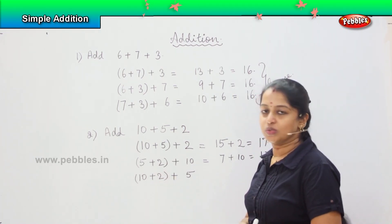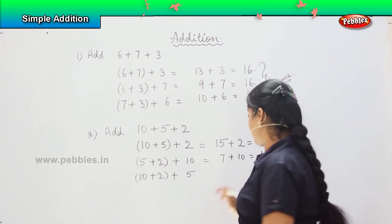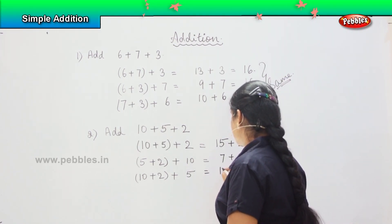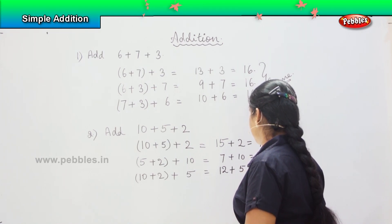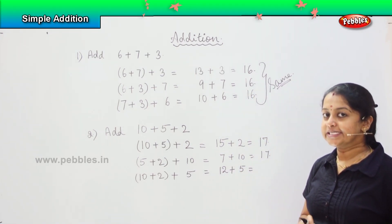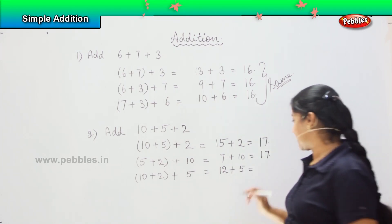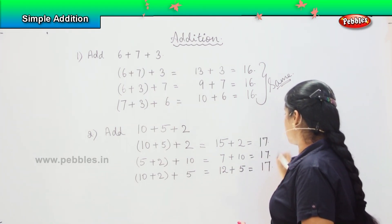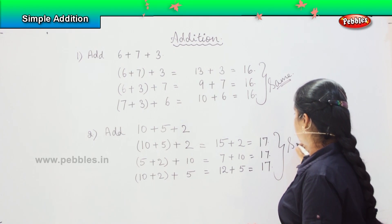The last one, 10 plus 2 is how much? Good, it is 12. So 12 plus 5 is 13, 14, 15, 16 and 17. Yes. So in all the three cases my answer is the same.